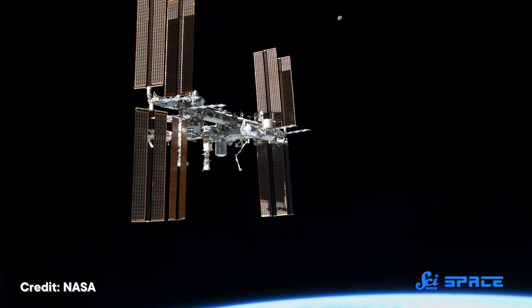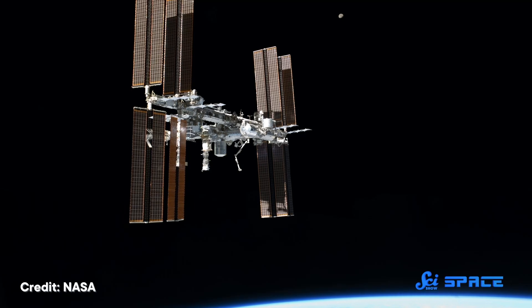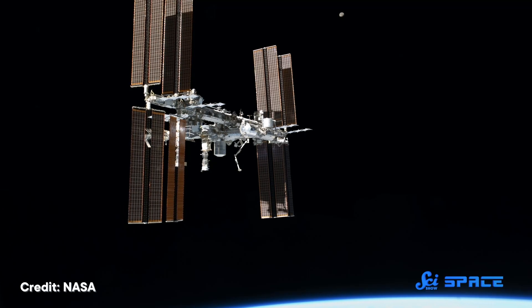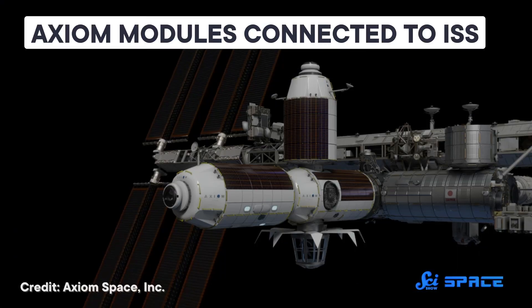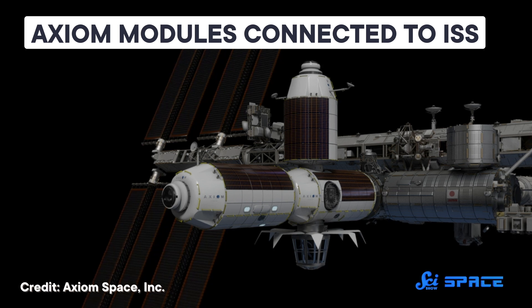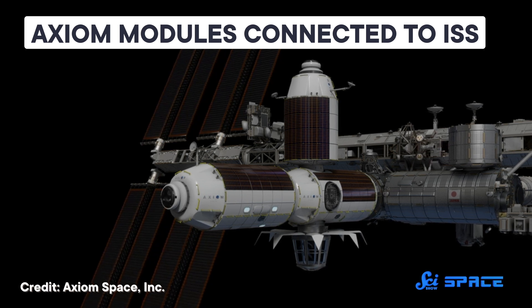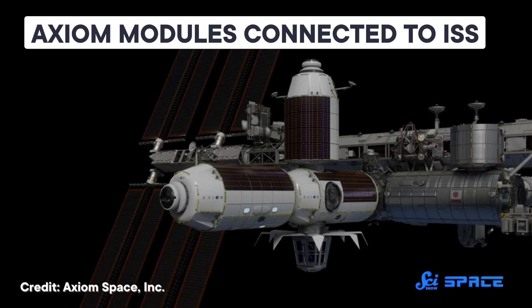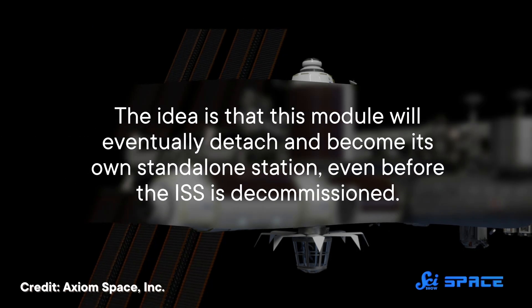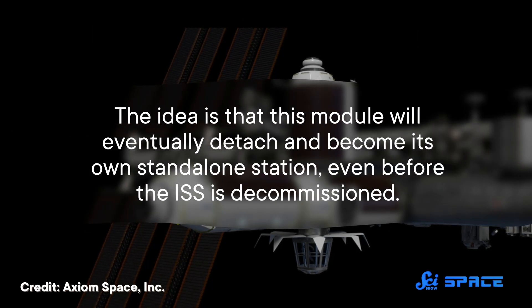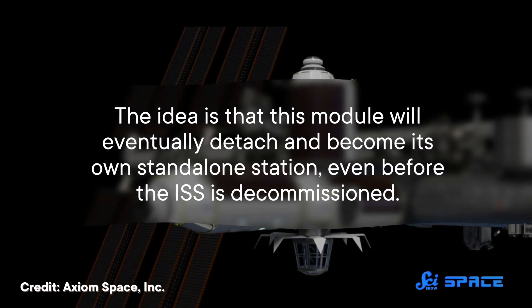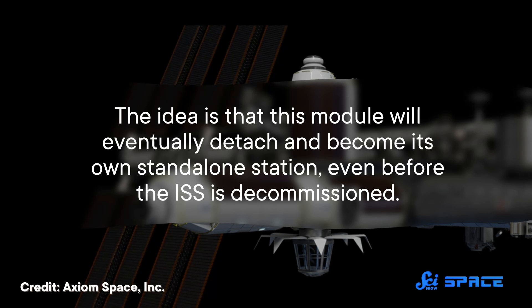So, as part of the transition, many of the ISS missions through the 2020s will be focused on getting these CLDs up and running. NASA already has an agreement with a company called Axiom Space to dock a module to the ISS, along with their own private crew. The idea is that this module will eventually detach and become its own standalone station, even before the ISS is decommissioned. There are likely to be many more.